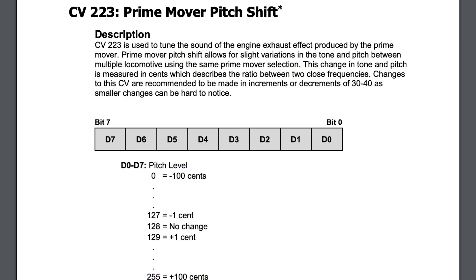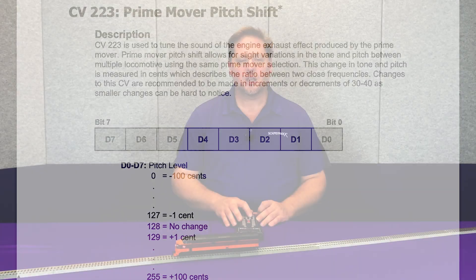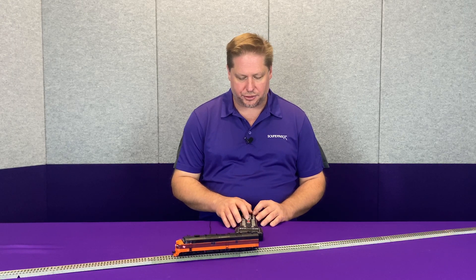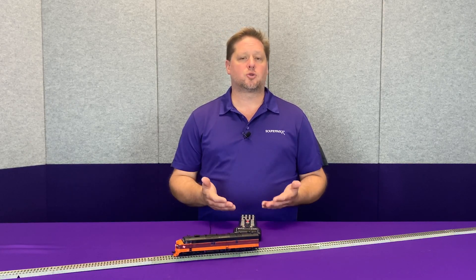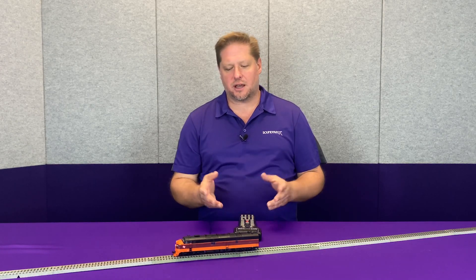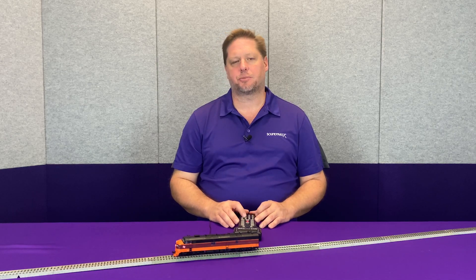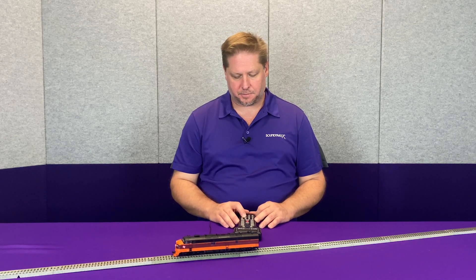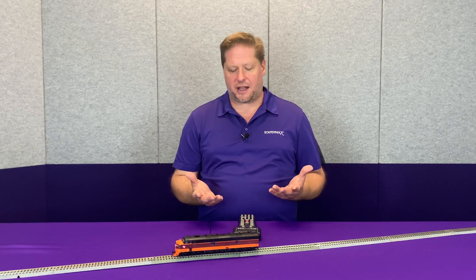First up is what's called prime mover pitch shift, which allows you to change the overall pitch of the locomotive slightly up or slightly down to give it a little bit of a difference in sound. I'm going to take CV223 and set it to a value of zero. The default value is 128, and setting it to zero is going to reduce the pitch all the way down to the lowest level. Let's listen closely — now you can hear how that's changed. You still have that dual EMD-567 character but it's at a lower pitch.